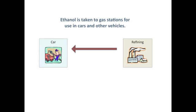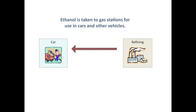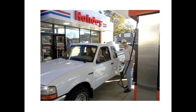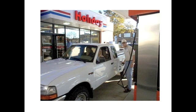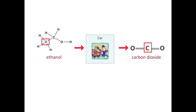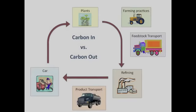The ethanol from the refinery is then transported to gas stations and other places where it can be put into vehicles. When you fill up your gas tank with ethanol, you are pouring carbon-containing molecules into your car. Your engine releases the energy in the ethanol in a process called combustion. In order to release the energy stored in the chemical bonds of the ethanol molecule, the carbon atoms are rearranged into smaller carbon dioxide molecules, which then enter the atmosphere. Some of these carbon dioxide molecules may be taken up by plants for photosynthesis.